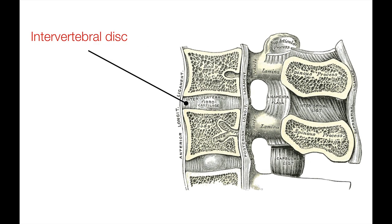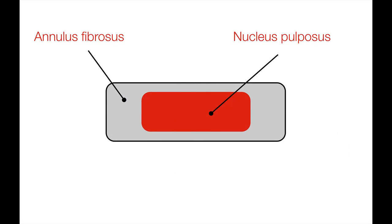Intervertebral discs live between each of the vertebrae, except in the cases of the sacral and coccygeal vertebrae, because the bones here are fused together. Here we can see a cross-section of an intervertebral disc. The discs consist of an outer fibrous part called the annulus fibrosis, and an inner jelly-like part called the nucleus pulposus.